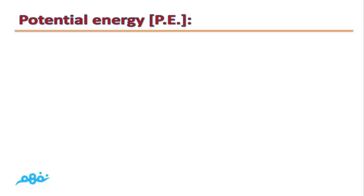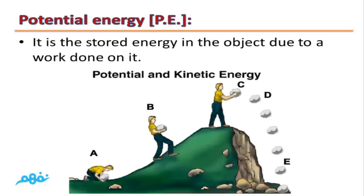Potential energy. What is meant by potential energy? It is the stored energy in an object due to work done on it. A person does work to lift a stone, and as the height of the stone increases, its potential energy increases until it reaches maximum potential energy. If the person lets the stone fall, its potential energy decreases gradually and its kinetic energy increases until it reaches its maximum value just before hitting the ground.